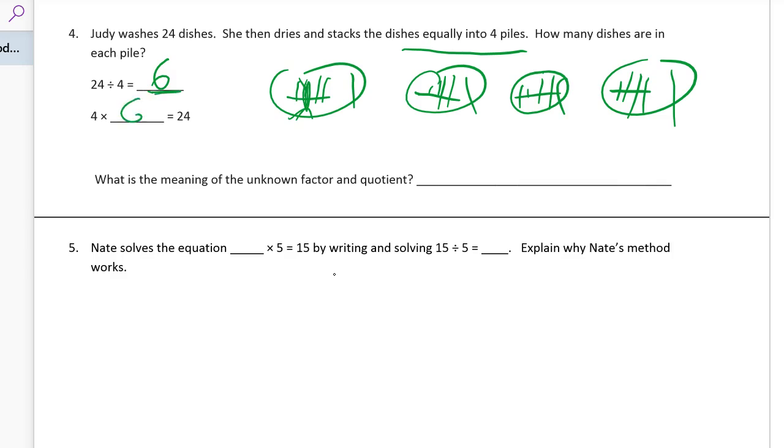That's 6 in each pile of dishes. So that's our quotient. And here's also the same quotient, same thing as a missing factor in multiplication. What's the meaning of the unknown factor in quotient? It's how many dishes in each pile. It's not how many dishes because how many dishes? There's 24 dishes. So that's not what the 6 is.